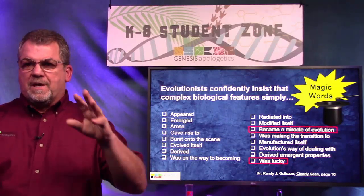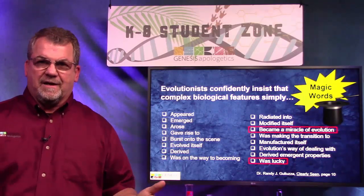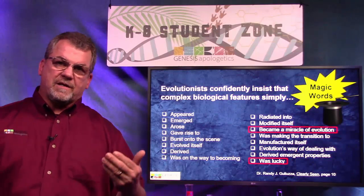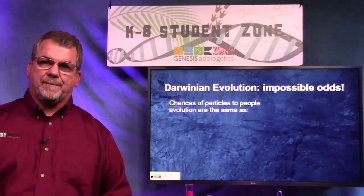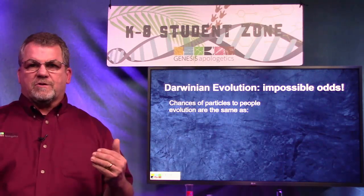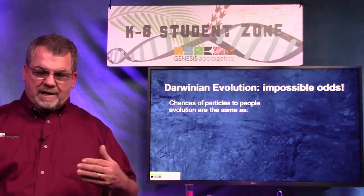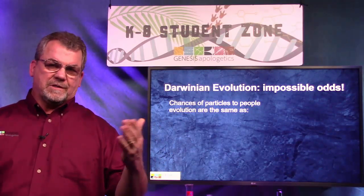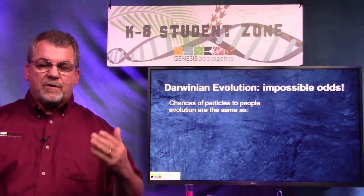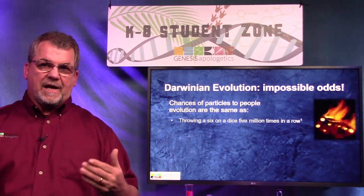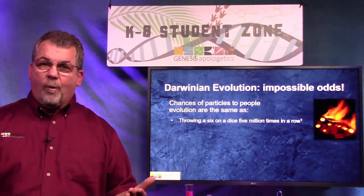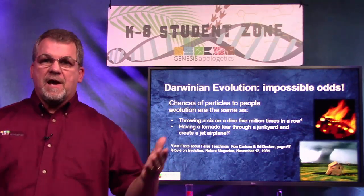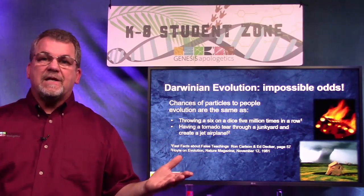Here are a couple favorites: 'became a miracle of evolution' and 'was lucky.' These would almost be funny, except these are used in textbooks trying to convince people that we evolved from slime. Evolutionist and mathematician Sir Fred Hoyle sat down and calculated the odds of going from goo to zoo to you. They're the same odds as rolling a six on a dice five million times in a row — the same odds as a tornado ripping through a junkyard and making an airplane. Sounds impossible? That's because it is.